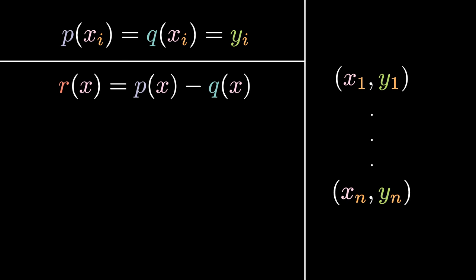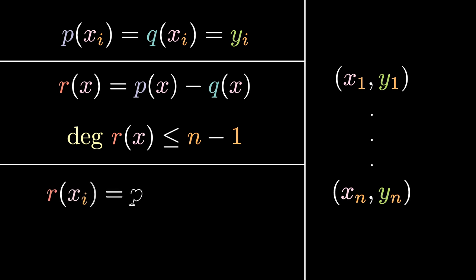Since p(x) and q(x) are distinct, r(x) is not going to be zero. And we know that since p(x) and q(x) are of degree n minus one, the maximum degree of r(x) is n minus one. This means that r(x) has at most n minus one roots. But we know that for all x_i, r(x_i) is equal to p(x_i) minus q(x_i), which is zero. And given that we have n different points, this gives us n roots, which is a contradiction.